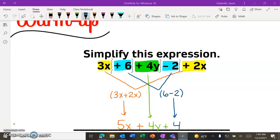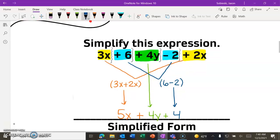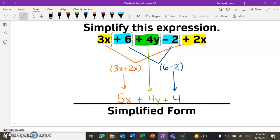All right, so if you combine your x terms together, that should leave you with a 5x. Combine your, well, there's only one y term, so that's going to be a plus 4y. And then combine your constants, we'll give you a plus 4. So this is going to be our simplified form for that expression.